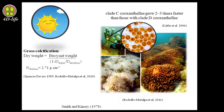We have two types of calcification: net calcification and gross calcification. When coral starts to calcify, some amount of calcium carbonate dissolves in seawater to adjust seawater pH. Calcification measured under this condition is called gross calcification. Net calcification equals gross calcification minus dissolution. To calculate net calcification, we can use the alkalinity anomaly technique, by measuring total alkalinity, dissolved inorganic carbon, calcium, ammonium, and phosphate before and after a specific period of coral incubation.